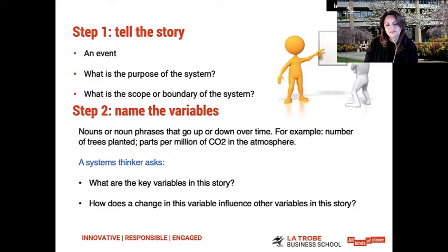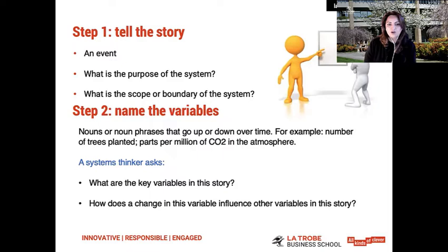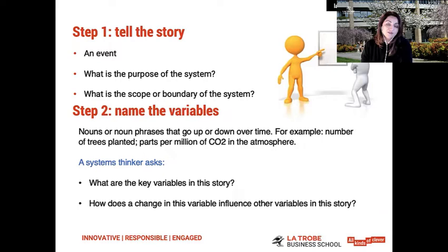Starting with step one: it's important to tell the story because very often when we look at wicked problems, if you jump straight to defining the problem, that can lead to ineffective analysis and ineffective solutions. It's important to begin with the story — an account of some particular event or events. Tell the story you want to analyze with one or more people. Use your own words and encourage listeners to ask questions to clarify their own understanding. Everyone should be clear about what the story is about and the scope and boundary of the story. Then, you need to name the variables, which are a set of nouns or noun phrases that go up and down over time.